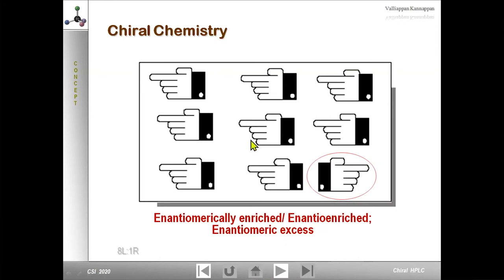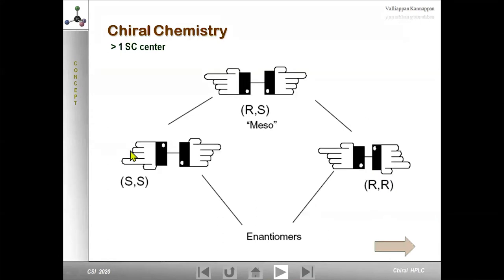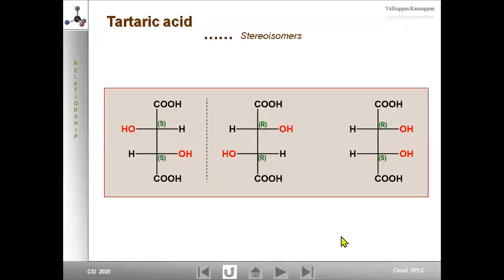Enantiomerically enriched or enantiomeric excess means, for example, eight towards the left and one towards the right. When synthesizing a chiral molecule by asymmetric synthesis, the purity of the final product is reflected by measuring enantiomeric excess. This slide shows the relationship between enantiomers and mirror images with two chiral centers. Compounds with complete inversion are enantiomers; others are diastereoisomers. A classic example is tartaric acid: centers one and two are enantiomers, while one and three, and two and three, are related as diastereoisomers.